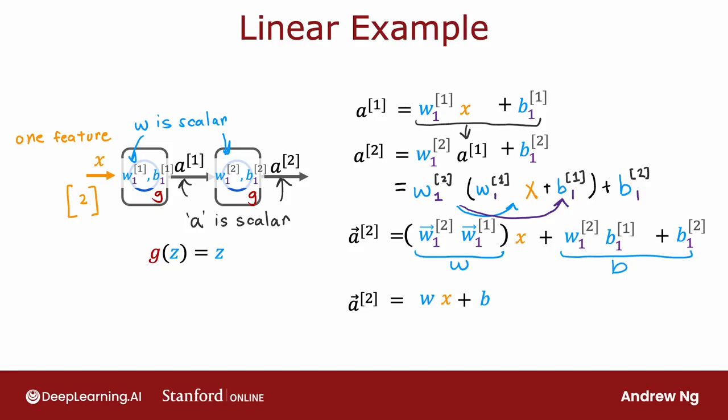And rather than using a neural network with one hidden layer and one output layer, we might as well have just used a linear regression model. If you're familiar with linear algebra, this result comes from the fact that a linear function of a linear function is itself a linear function. And this is why having multiple layers in a neural network doesn't let the neural network compute anything more complex than just a linear function.